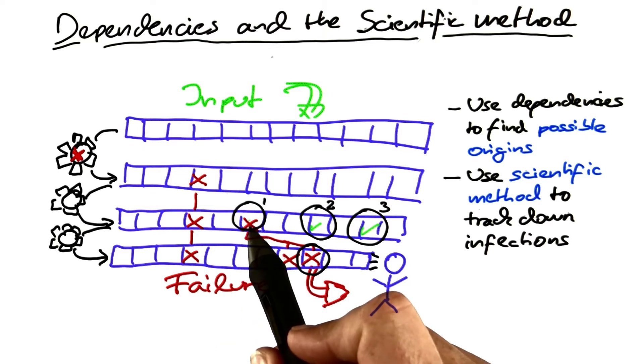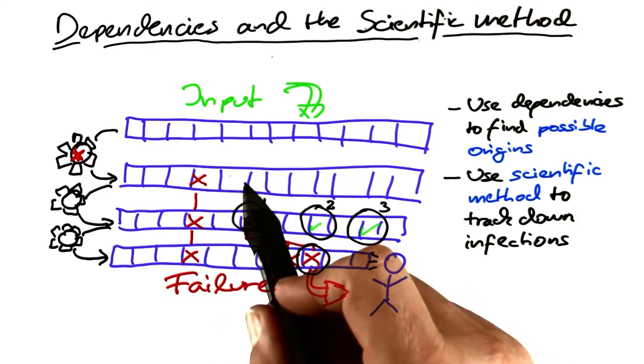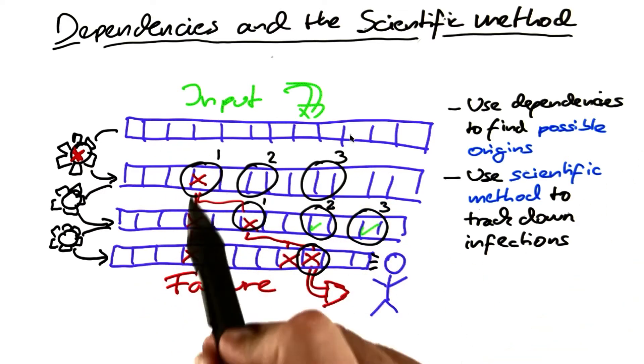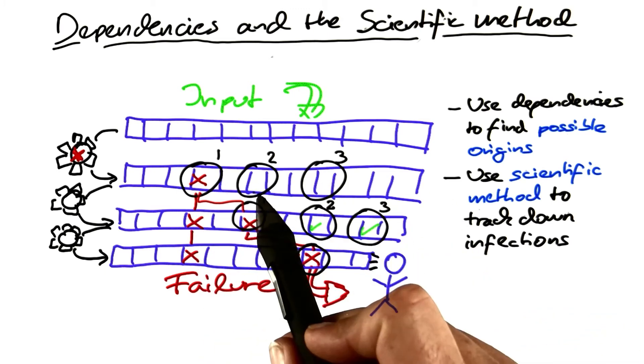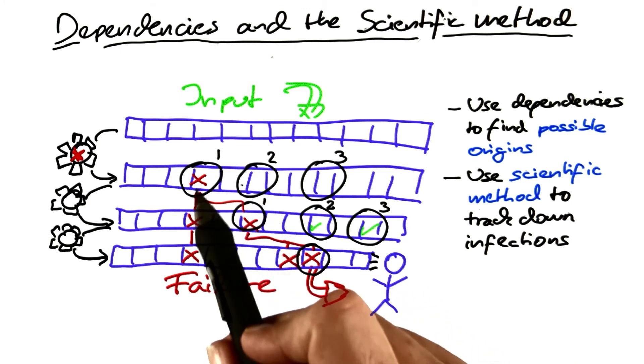Then we repeat the whole thing back and back again, choosing between multiple possible origins, following back the dependencies, and again using the scientific method to track down which of these actually is at fault.